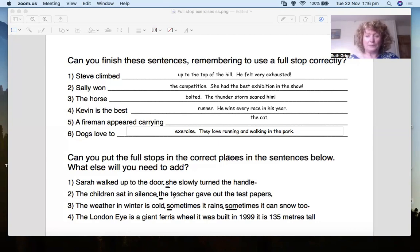Okay, number four. The London Eye is a great giant, sorry, Ferris wheel. It was built in 1999. It is 135 meters tall. So again, full stop on the end.